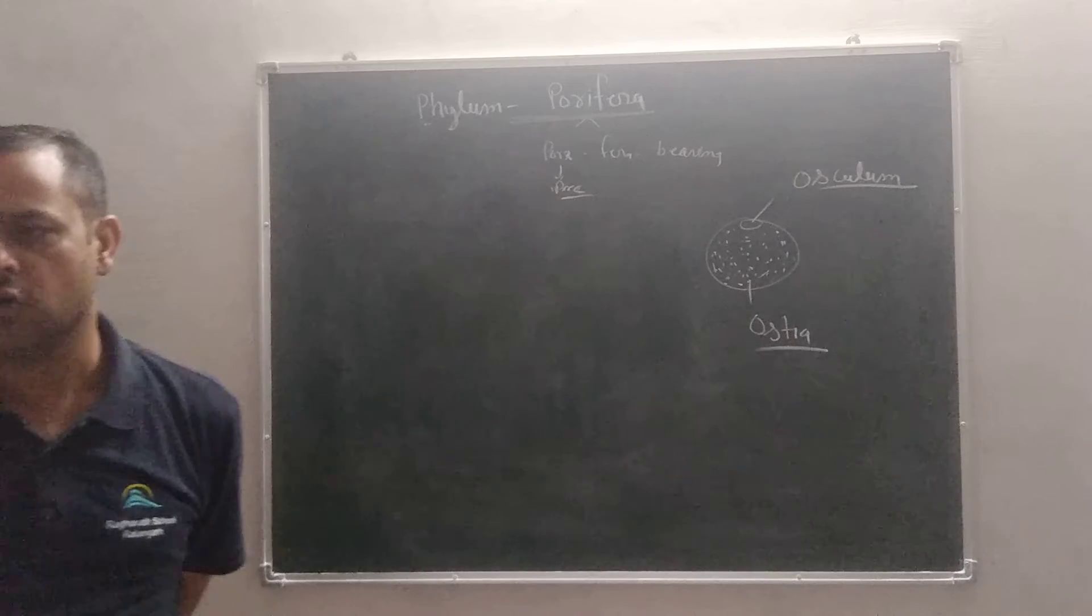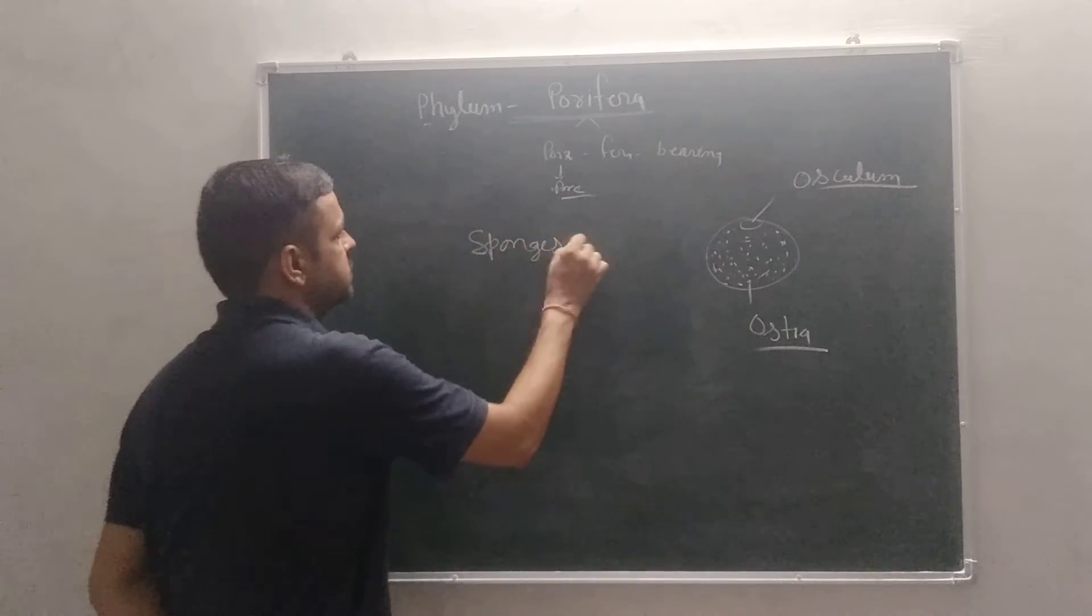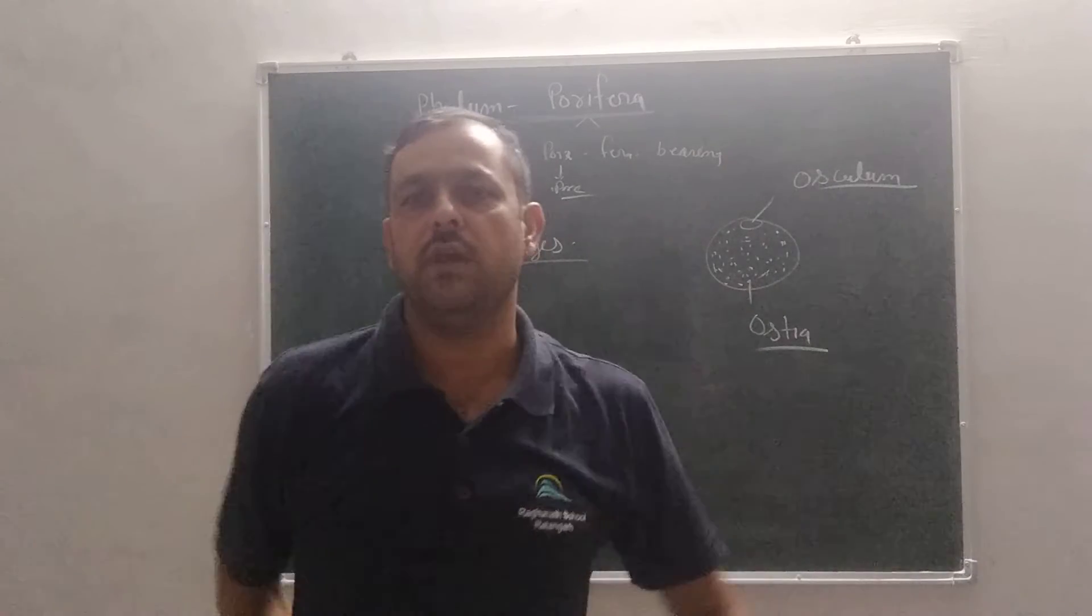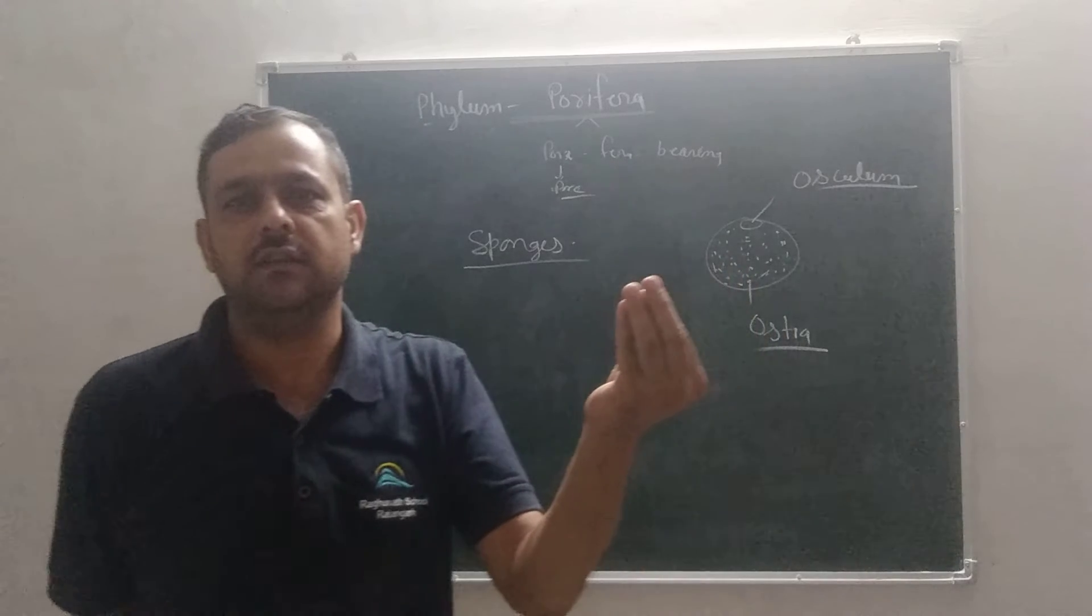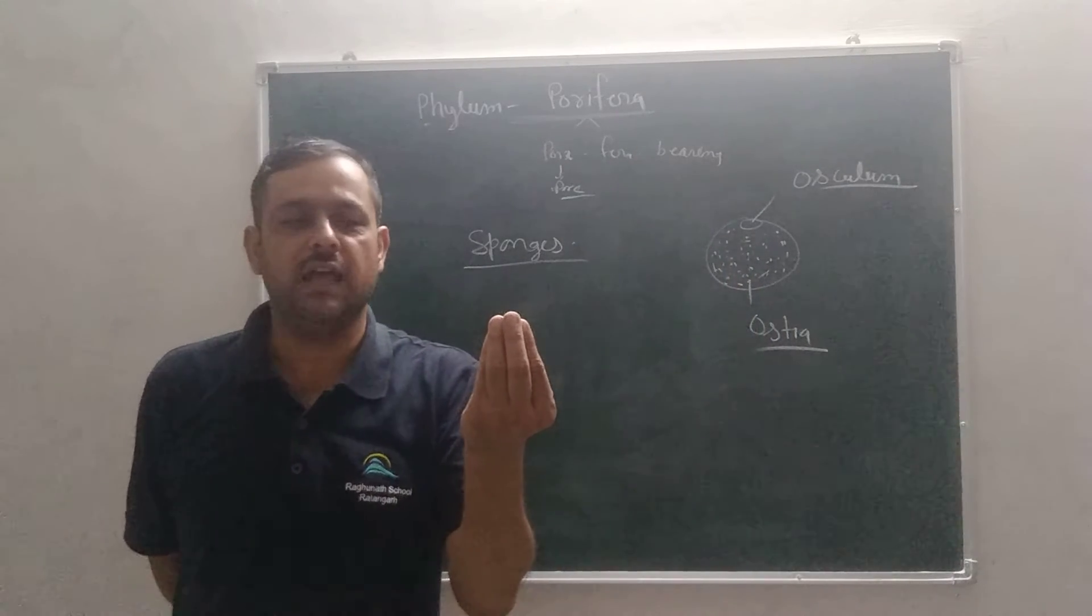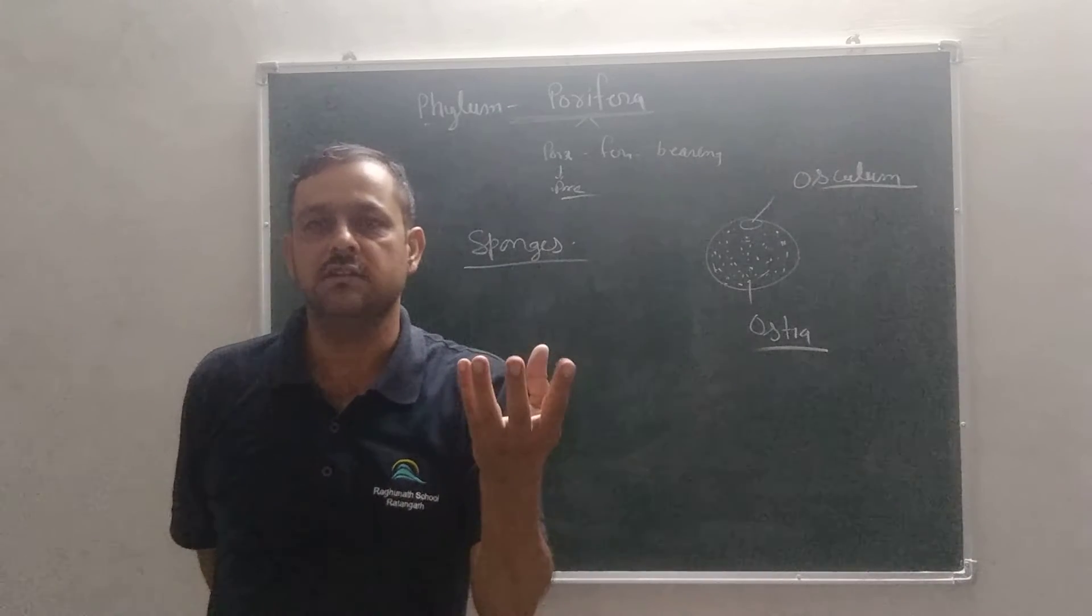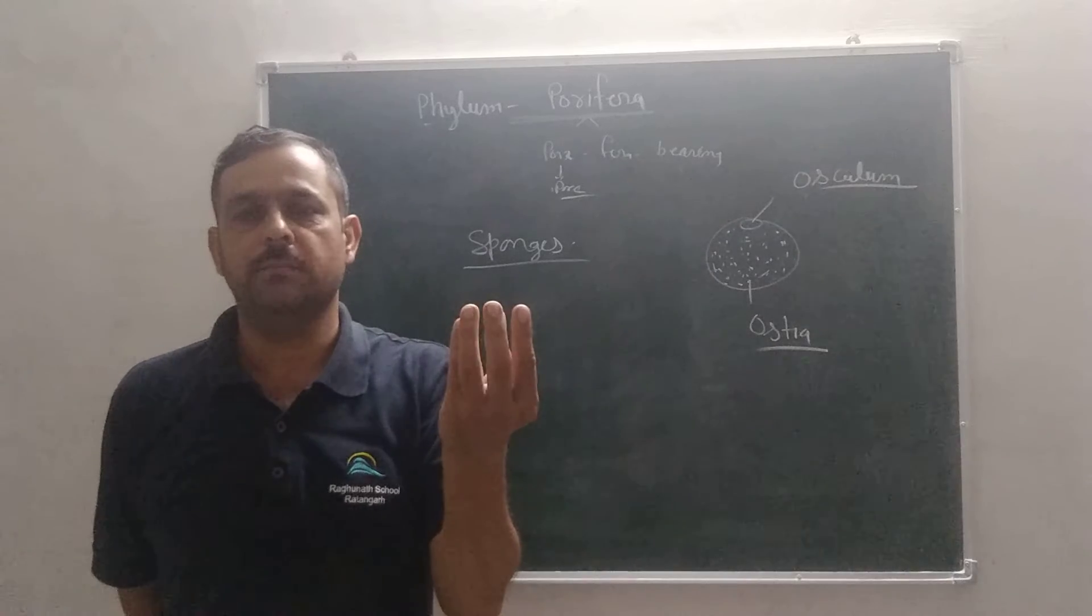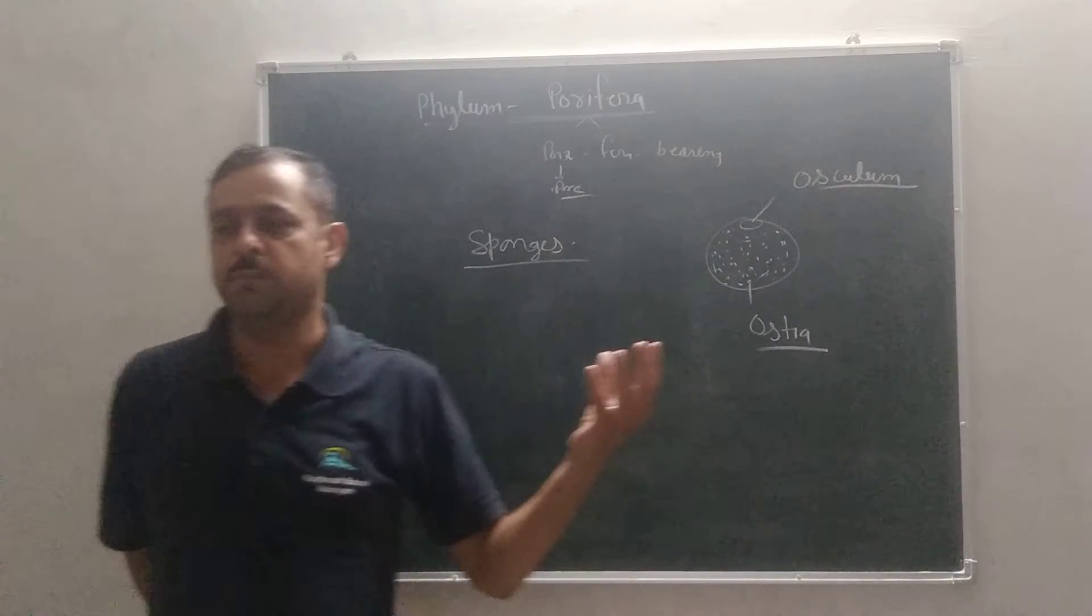These are pore bearing animals and are commonly called Sponges. These animals are commonly called Sponges because, just like Rasgulla, whenever these animals outlet the water, they can concentrate it, and after sometimes they come again in their main stage. This is why they are called Sponges.